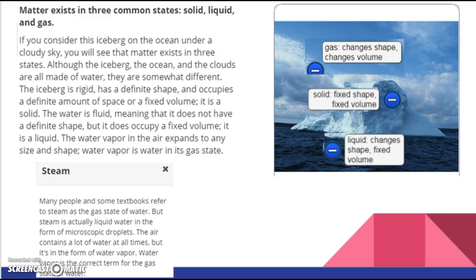So, if you consider this iceberg on the ocean under a cloudy sky, you will see that matter exists in three states on Earth very typically. Although the iceberg, the ocean, and the clouds are all made of water, they are somewhat different. The iceberg is rigid, has a definite shape, and occupies a definite amount of space or a fixed volume. It is a solid. Okay, let's break that down and talk about what that means. Obviously, rigid, we know that ice, we've all seen ice and probably fallen on ice. We know that it's hard, right? And so, ice can have a definite shape.